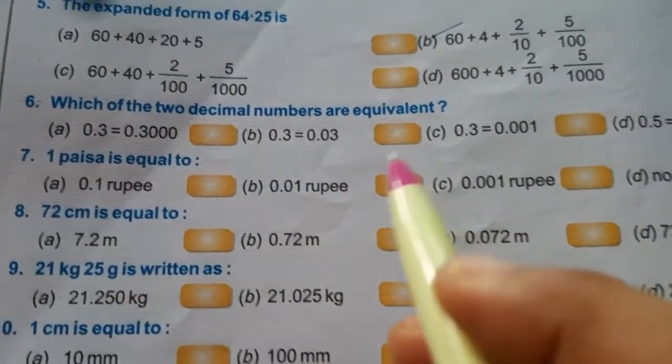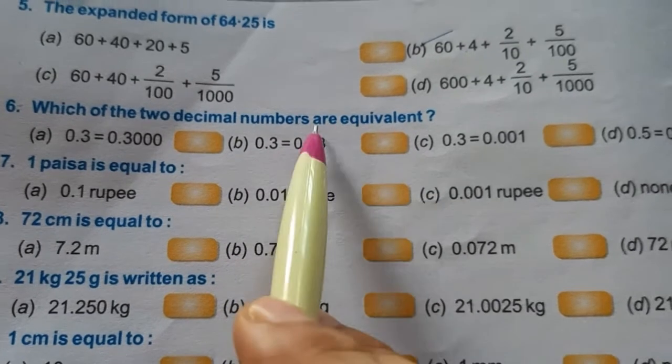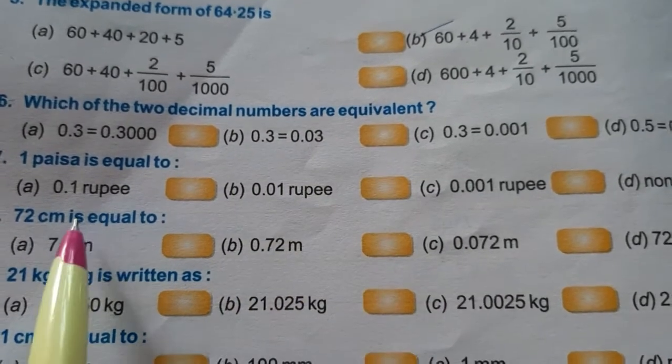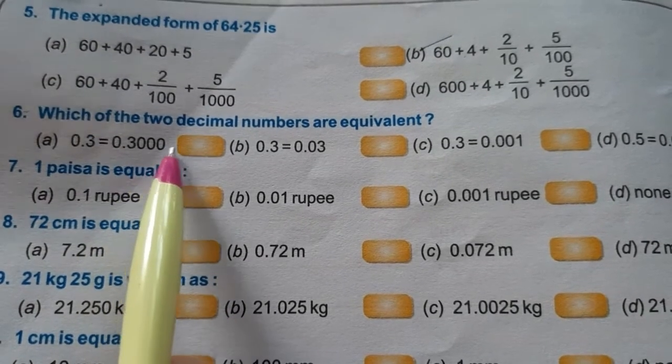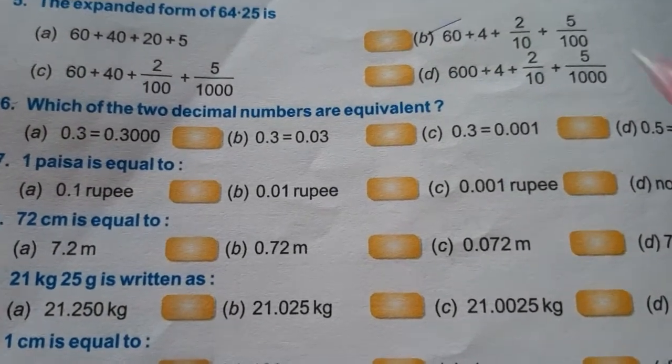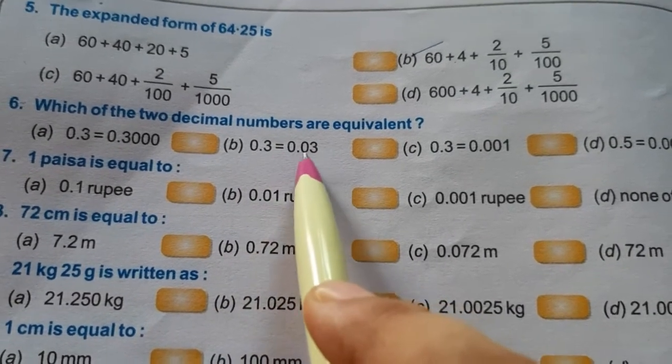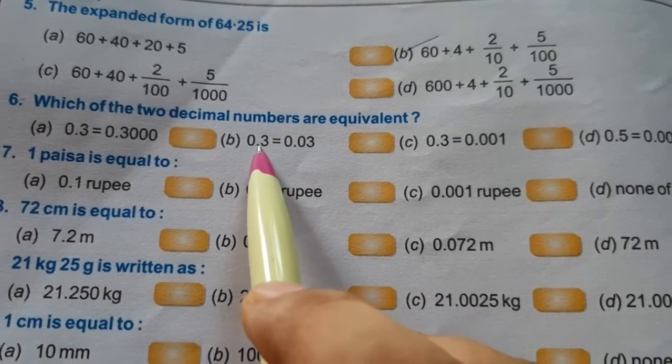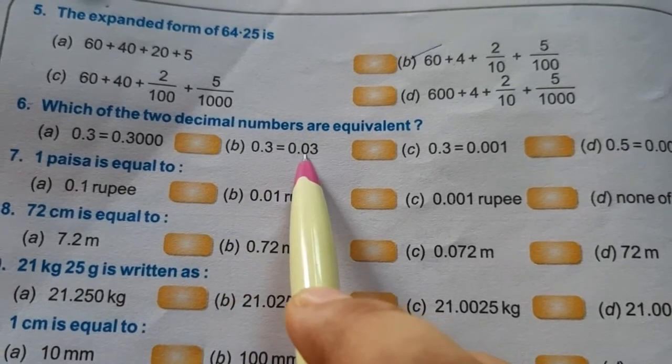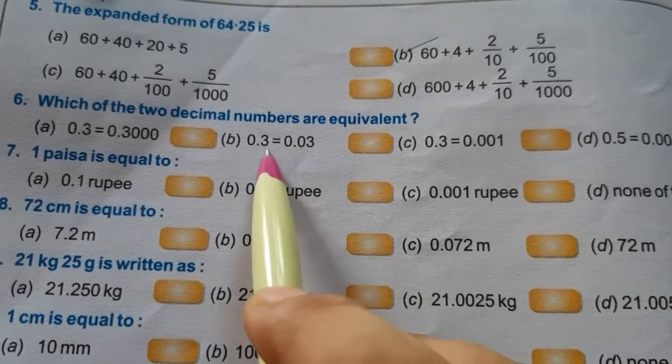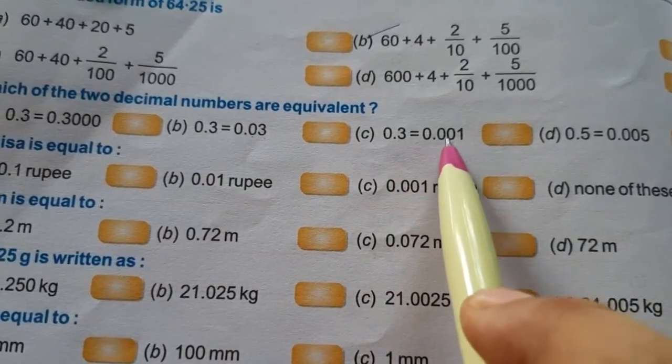Next is which of the two decimal numbers are equivalent. Equivalent means both values are same. See here is 0.3, here is 0.3000. Another is 0.3 and 0.03. See the places are different here. Here decimal is after only 1 digit, here decimal is after 2 digits. So these won't be equivalent.